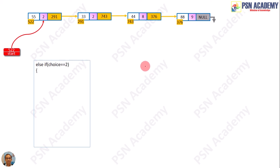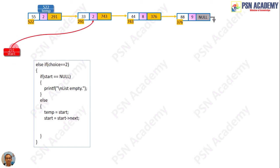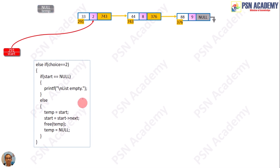Next, choice 2 handles the deletion operation. Before deleting, you must check whether the list is empty by checking if start is null. If not, the scenario is that start is pointing to the node at 522. You set temp to start, then start equals start->next — start->next is 291, so start now points to the next node. Then you call free(temp) to clear the memory at 522, and set temp to null.